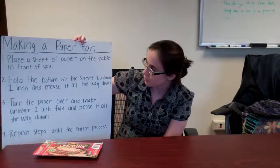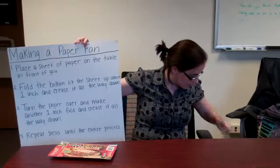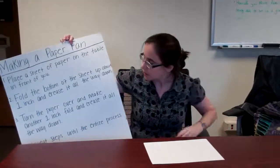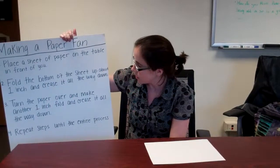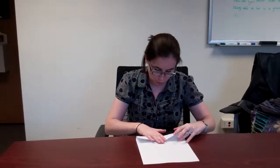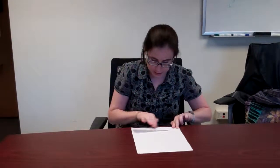Okay, so we have a direction sheet that tells us all the steps involved to make a paper fan. So the first step says, place a sheet of paper on the table in front of you. Okay, so first I'm going to put the piece of paper here. I'm going to move my box so it's not in my way. Then the second step says, fold the bottom of the sheet up about one inch and crease it all the way down. Okay, so here's my piece of paper. And it says, fold it like this, one inch. And I'm going to crease it all, I'm going to use my finger to crease it all the way down, just like that. Let's see what the steps now say.